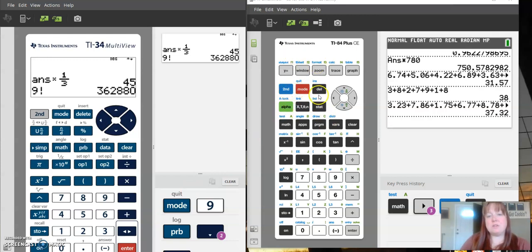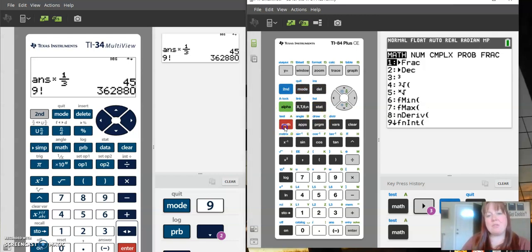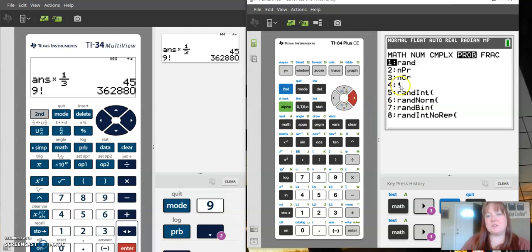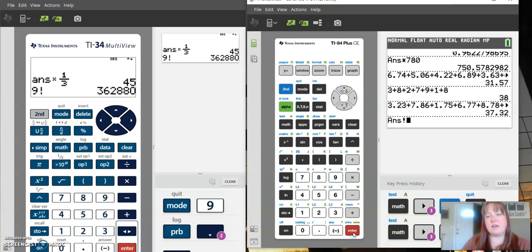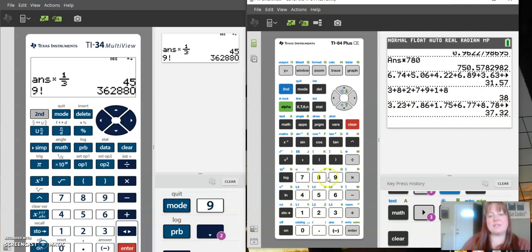So on a graphing calculator, it is also in the probability menu, but you don't see the probability menu on a button. So you push math and then you arrow over to probability and then there's the factorial button right there. So you just go down into there, but it's going to, it's actually going to give me 37.32 factorial because I forgot to put a number in first. So let's say we're going to do, well, let's do our billiard example.